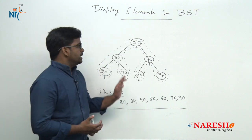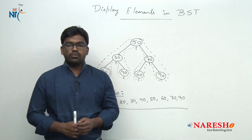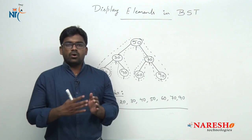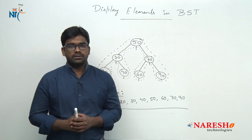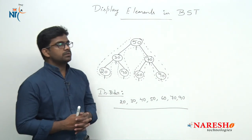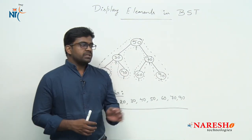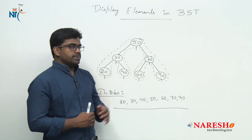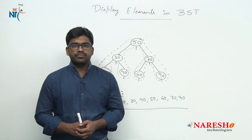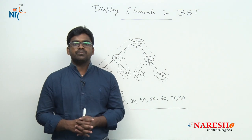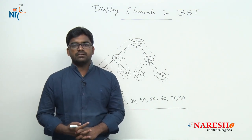If you perform in-order traversal on a binary search tree, all elements will be displayed in ascending order. Please also try using the same example to perform post-order and pre-order traversal. Hope you understood. For more videos, please subscribe to the Nourish IT channel. Thank you.